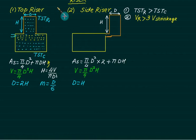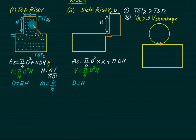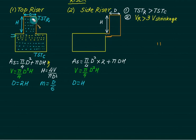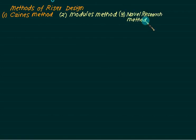Cylindrical risers are more popular than other types. For a spherical riser, the inlet is very restricted, so filling the shrinkage cavity takes more time and the basic purpose is not solved. Additionally, manufacturing a spherical cavity in sand is very difficult. For a cubical riser, the modulus is A/6. There are four methods of riser design: first, the Chvorinov's method (Keynes method); second, the Modulus method; third, the Naval Research Laboratory method; and fourth, the Shrinkage Volume method.